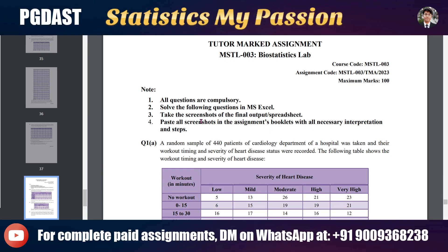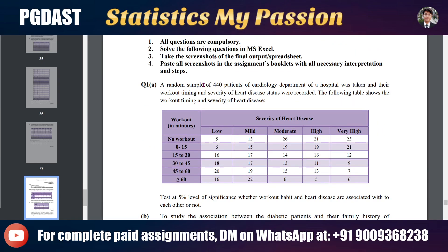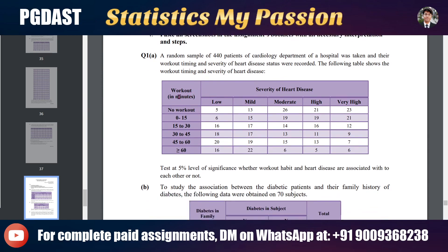Question number one: a random sample of 440 patients from the cardiology department of a hospital was taken. Their workout timing and severity of heart disease status were recorded. The table shows workout timing in minutes — ranging from 0 to 15 up to greater than 60 — against severity of heart disease, with five columns: low, mild, moderate, high, and very high.